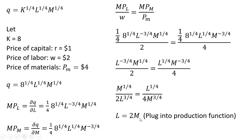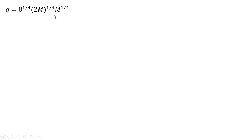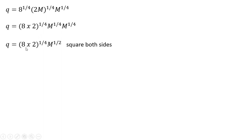What I'm going to do with this result L equals 2M is plug it into the production function where I see an L — I'm going to plug in 2M. So we have this result after the substitution. Rewriting that result and collecting some terms: eight times two is raised to the one-fourth power because we've got this two raised to the one-fourth. So just move those two values together, and M to the one-fourth times M to the one-fourth.